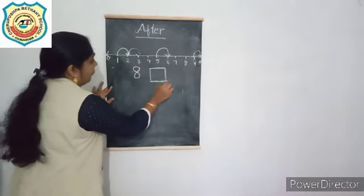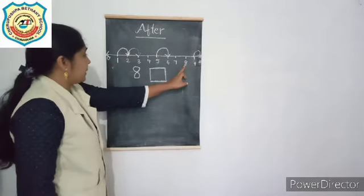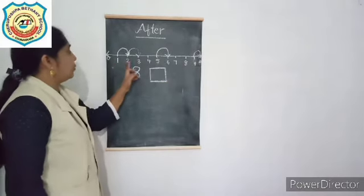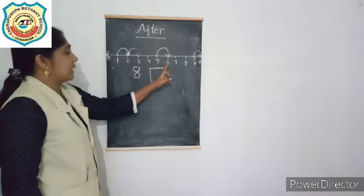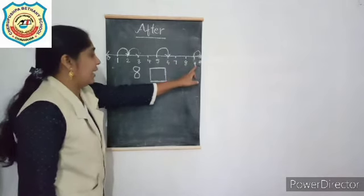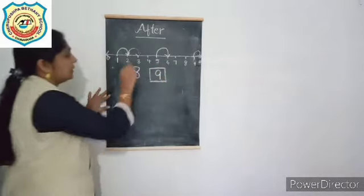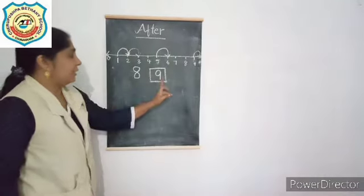What comes after 8? Use this number line. 0, 1, 2, 3, 4, 5, 6, 7, 8. After 8 we can see 9. The number is 9.